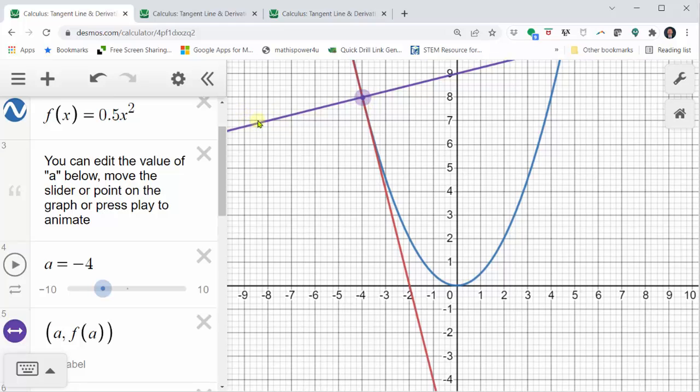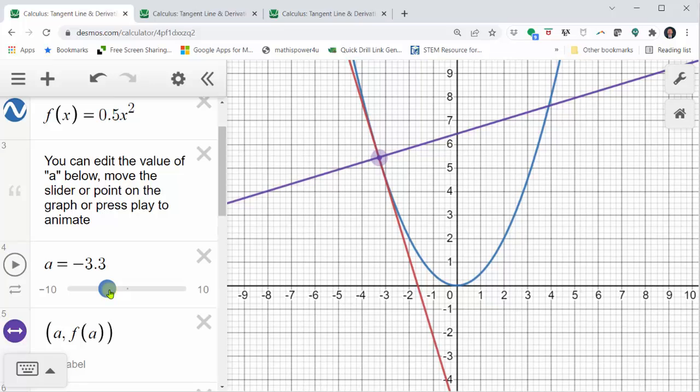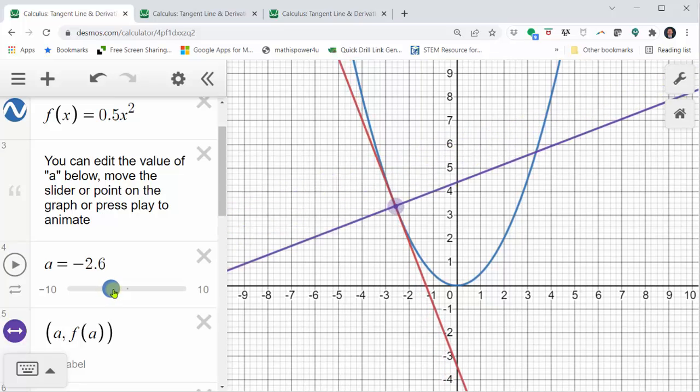The purple line is the normal line to the blue curve. Notice how the tangent line and normal line remain perpendicular as we animate both the tangent line and the normal line.